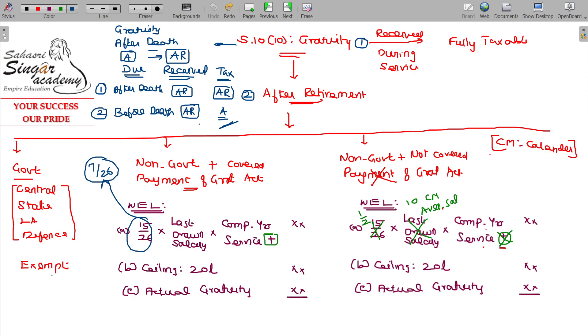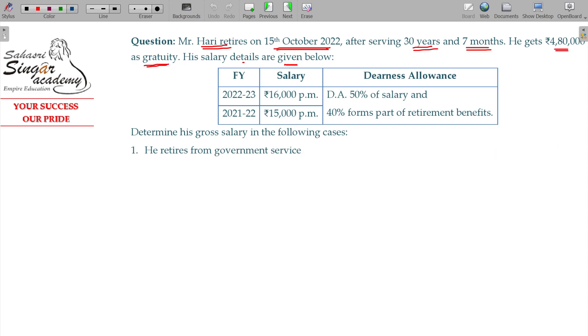In this illustration, he retires from the government service. The scenario is fully exempt, the Gratuity is fully exempted, nothing is taxable, nothing is taxable.